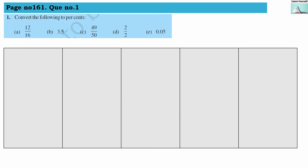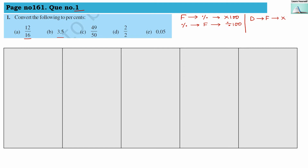Welcome to Learn Yourself. Try This Sums, page number 161, question number 1: convert the following to percentage. They have given us fractions and decimal forms of numbers that we have to convert into percentage. When fractions are there, we multiply with 100. When converting percentage to fraction, we divide by 100. If decimal numbers are there, we first convert to fraction and then multiply with 100 — one extra step.